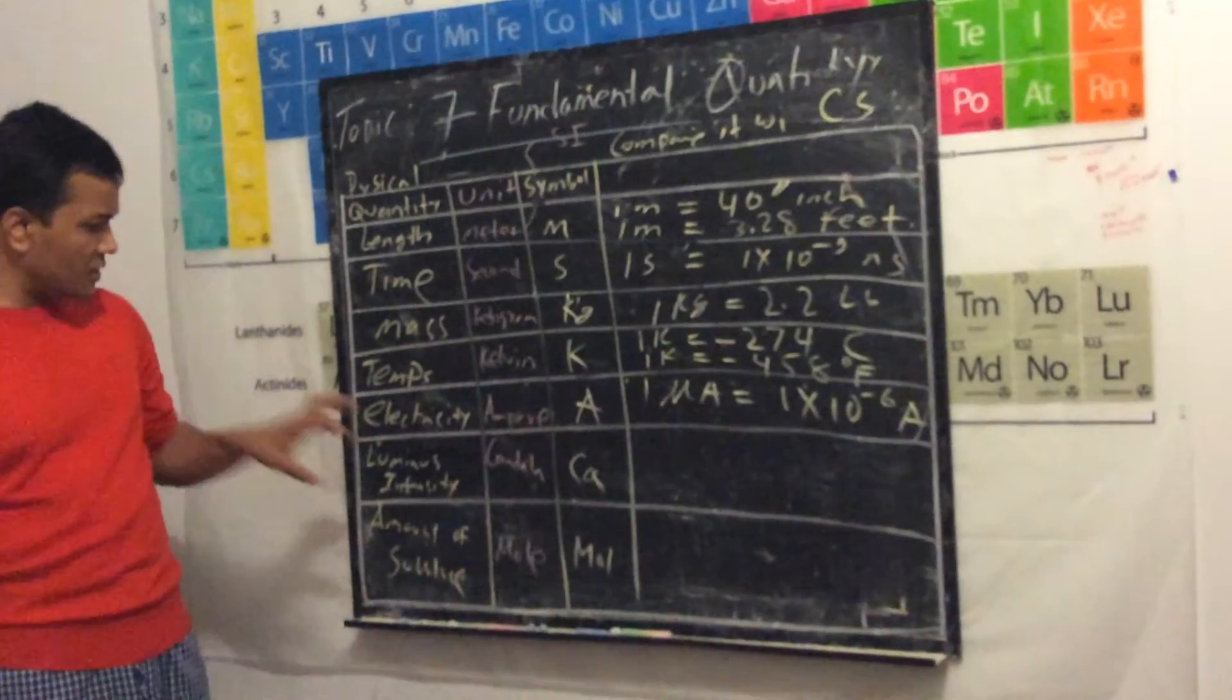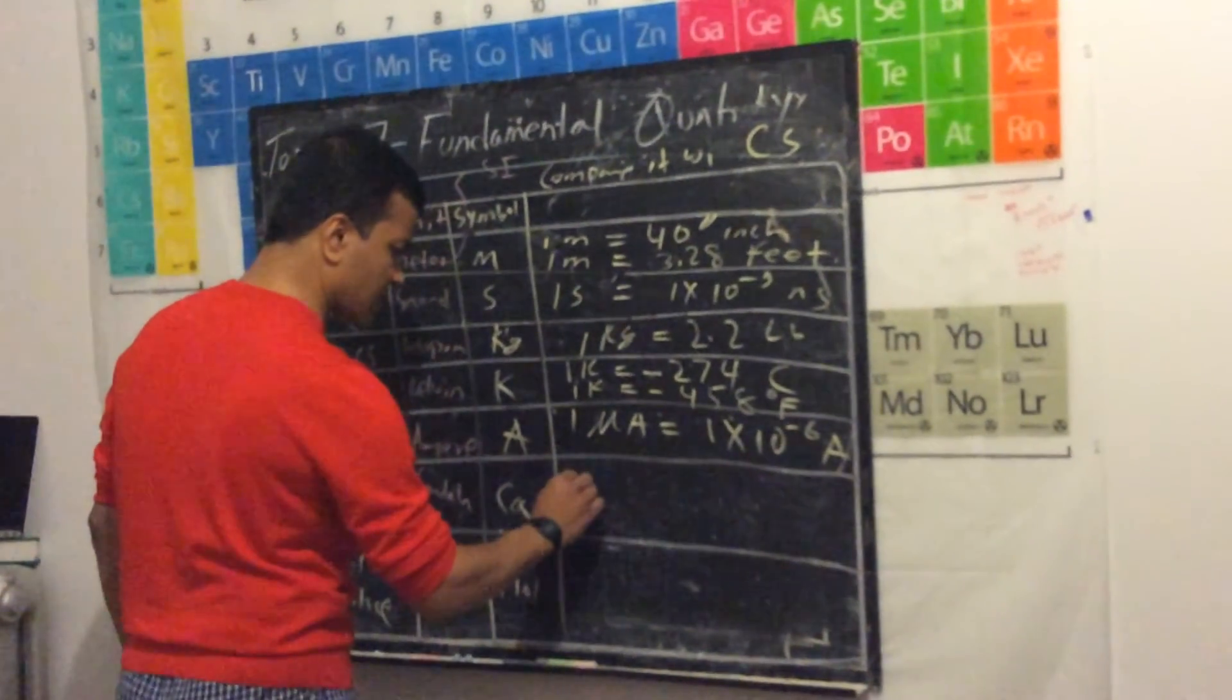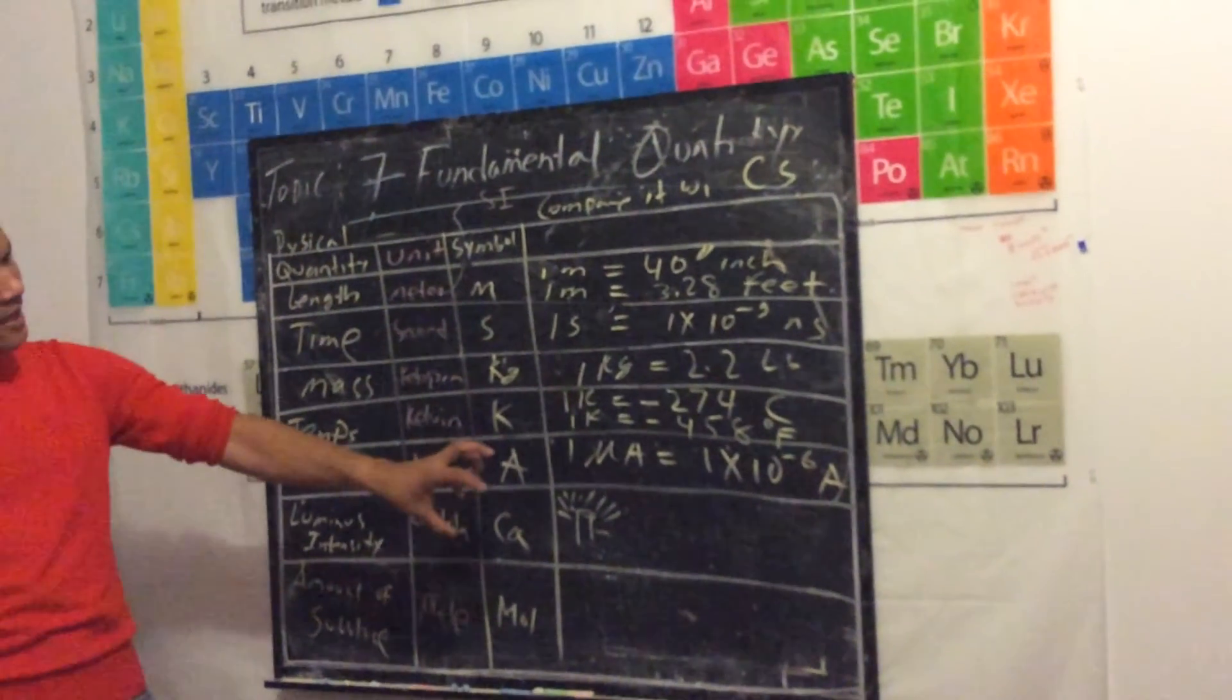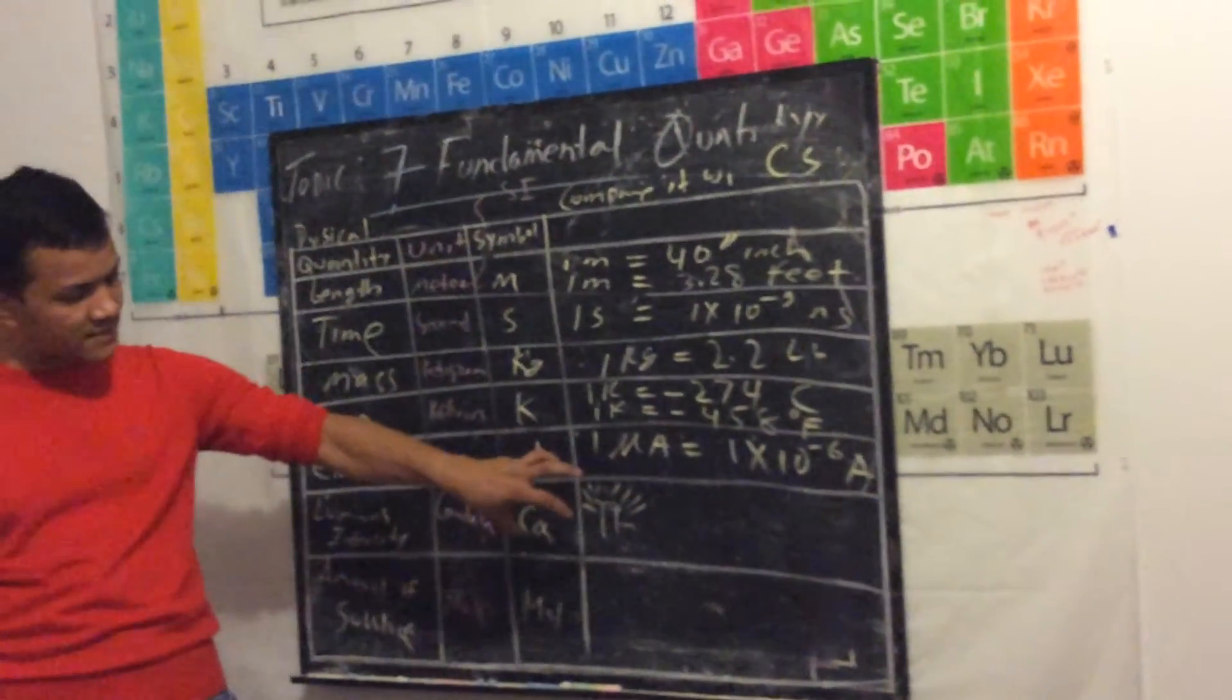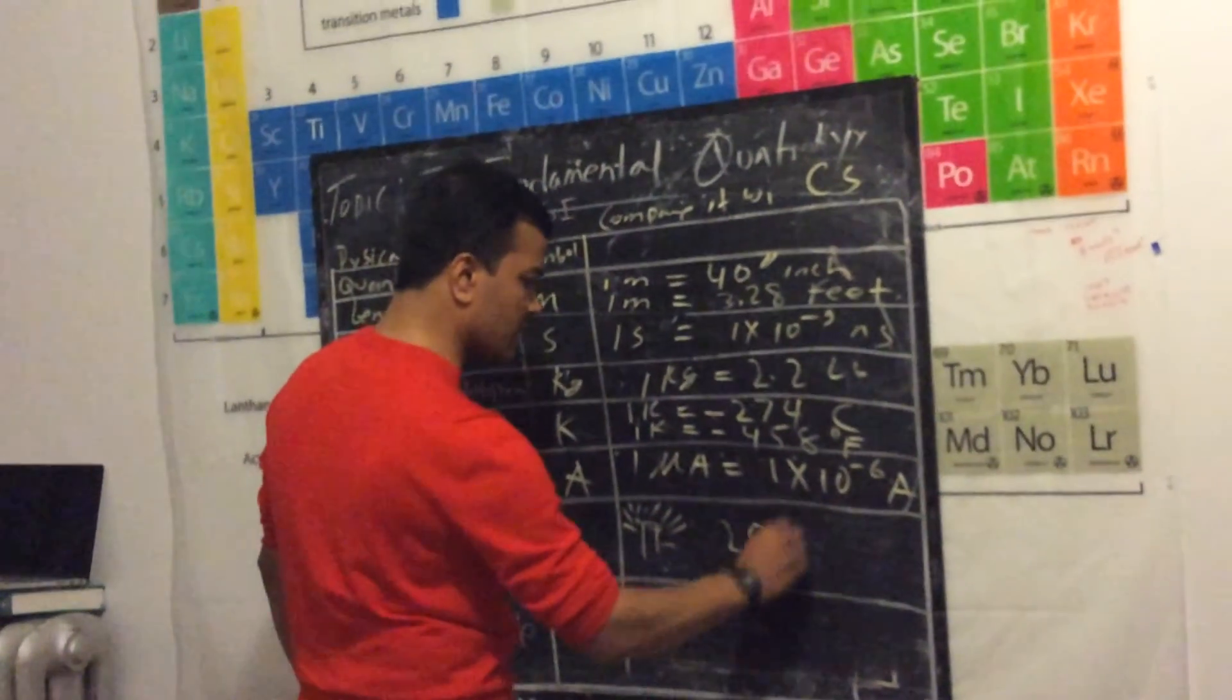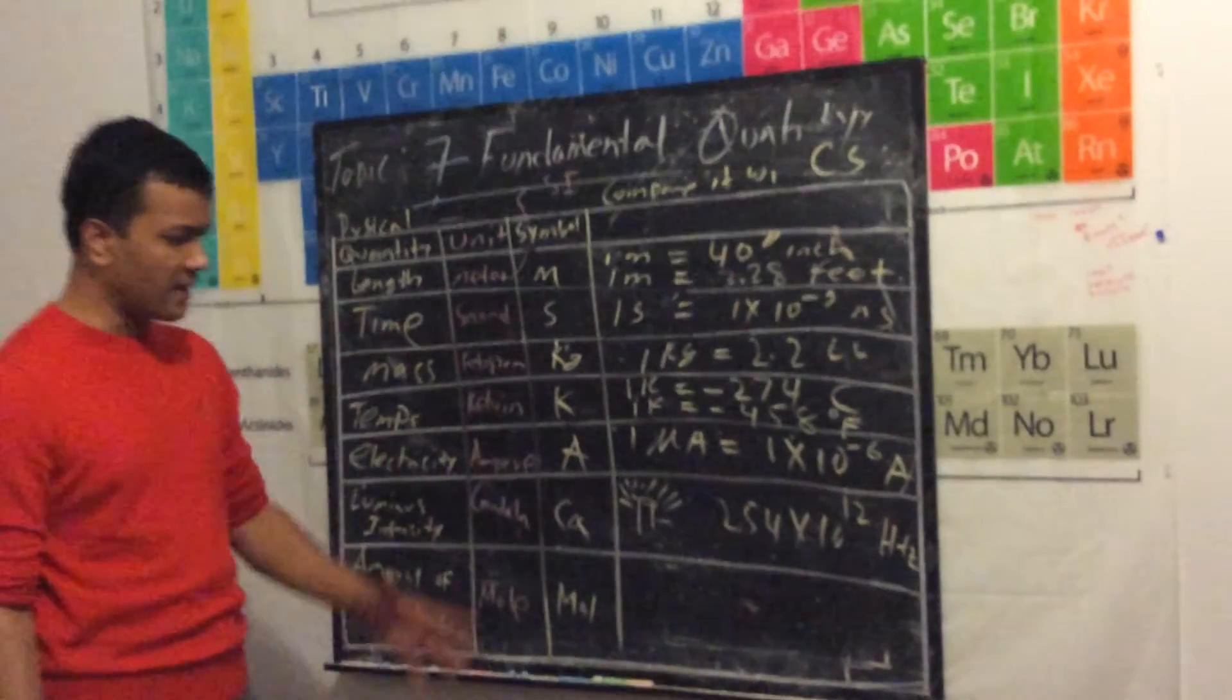Luminous intensity we use for light. For example, candle. The unit actually comes from candle. When you light a candle, what happens? It goes in all directions and you want to measure the light, the amount of light in a given amount of space. How do you do that? One candela is about 254 times 10 to the power of 12 hertz, one over second of hertz.